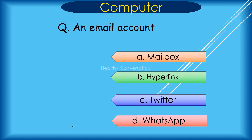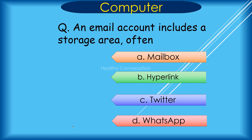Question: An email account includes a storage area often called dash. A. Mailbox, B. Hyperlink, C. Twitter, D. WhatsApp. Correct answer is A. Mailbox.